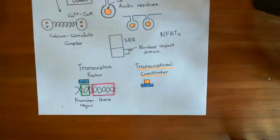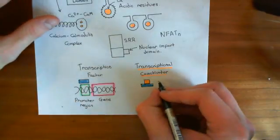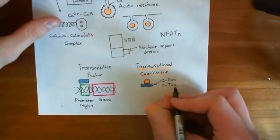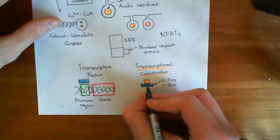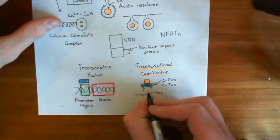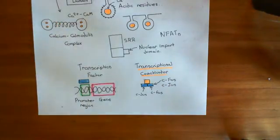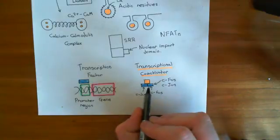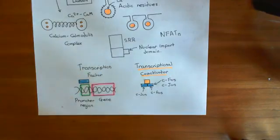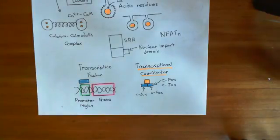NFAT is not a particularly powerful transcription factor. Instead, it's far better as a transcriptional co-activator. The transcription factors it affects are usually the C-fos and C-jun heterodimers. C-fos and C-jun are two transcription factors which often form heterodimers — one C-fos and one C-jun bind together to make a heterodimer that then binds to the promoter regions of DNA. The nuclear factor of activated T-cells binds to that heterodimer and affects which genes it's going to increase transcription of. That's the mechanism by which we activate the nuclear factor of activated T-cells. In the next video, we'll look at how we activate nuclear factor kappa-B.